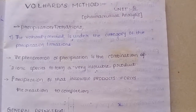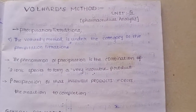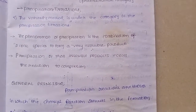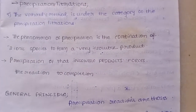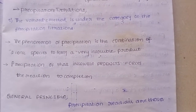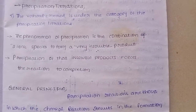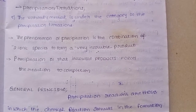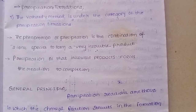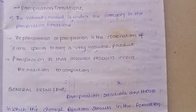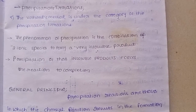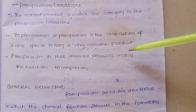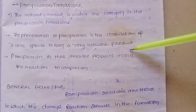Volhard's method is mostly under the precipitation titration. Volhard's method is used under the category of precipitation titration. The phenomenon of precipitation is the combination of two ionic species to form a very insoluble product.